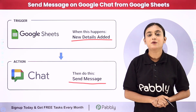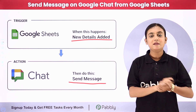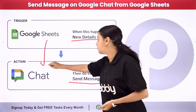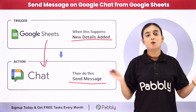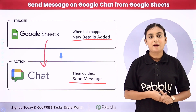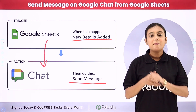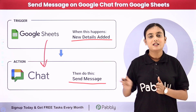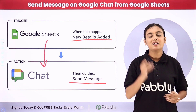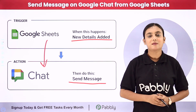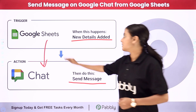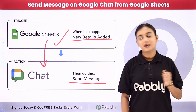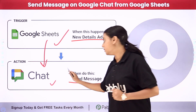For that, we are going to simply create an automation between Google Sheets and Google Chat with the help of Pabbly Connect. Pabbly Connect runs on two concepts: trigger and action. In this process my trigger application is going to be Google Sheets and my action application is going to be Google Chat.